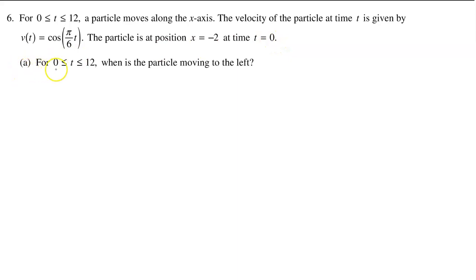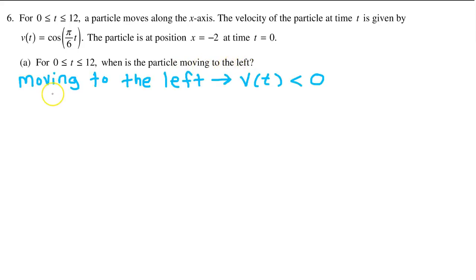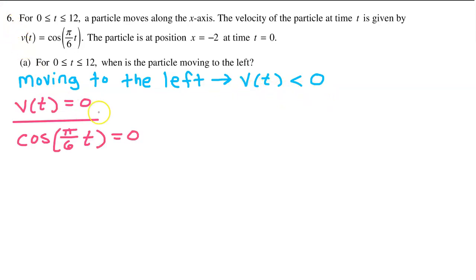Part A: On the interval from 0 to 12, when is the particle moving to the left? Moving to the left means that velocity will be negative, so our strategy will be to make a sign chart of velocity and see where velocity is negative and positive. To make a sign chart, we first must find the values of t where velocity is equal to 0. So let's set cosine of pi over 6t equal to 0 and solve.